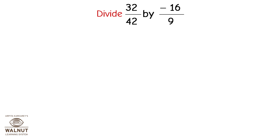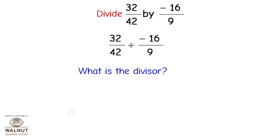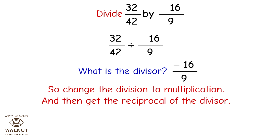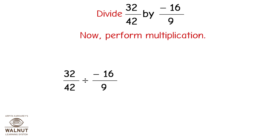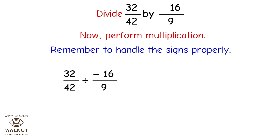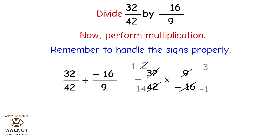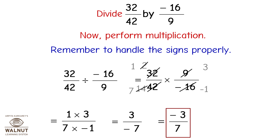Divide 32/42 by (-16)/9. The divisor is (-16)/9, so change division to multiplication and take the reciprocal: 9/(-16). Remember to handle the signs properly. 32/42 ÷ (-16)/9 = 32/42 × 9/(-16) = (1×3)/(7×(-1)) = 3/(-7) = -3/7.